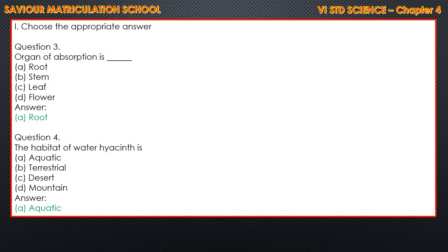Question 3: The organ of absorption is DASH. Options: A. Root, B. Stem, C. Leaf, D. Flower. The correct answer is A. Root.